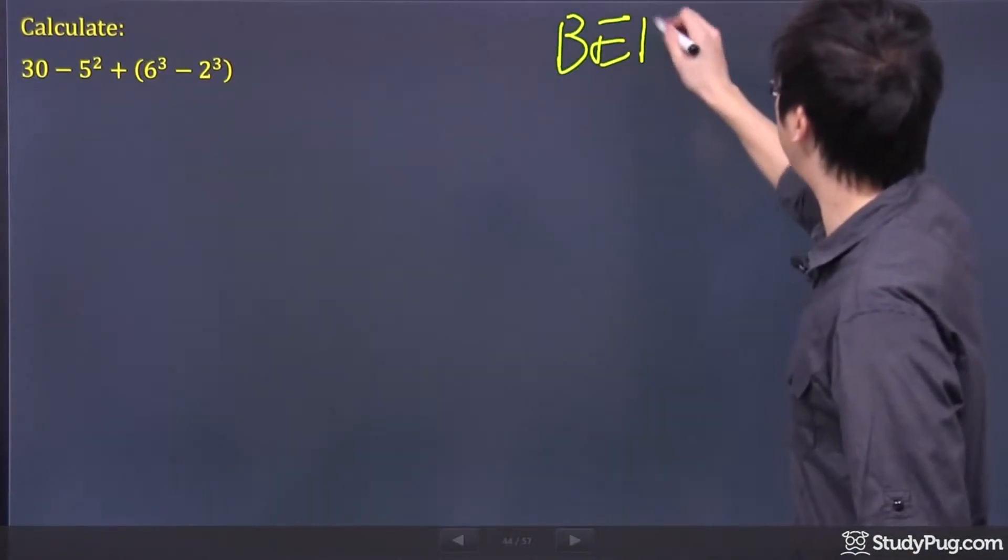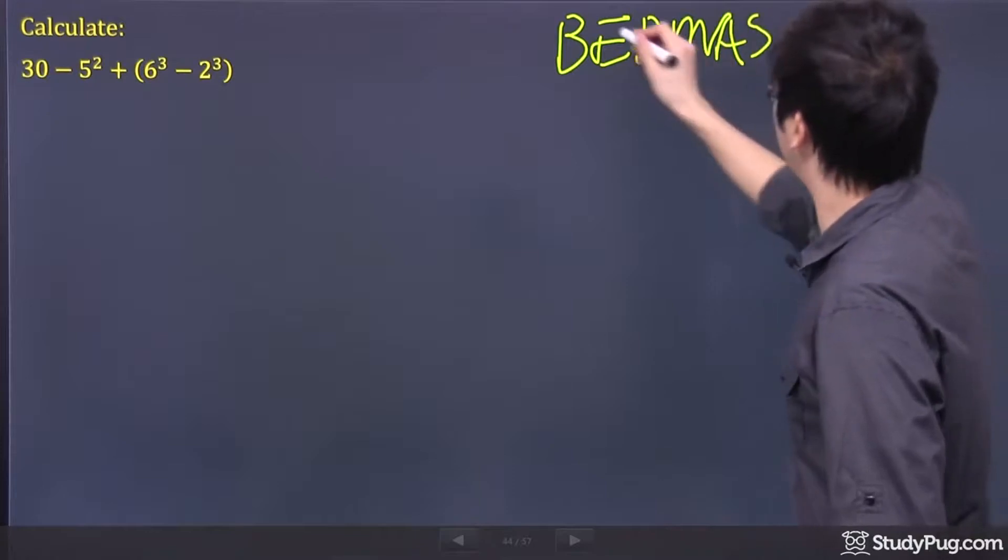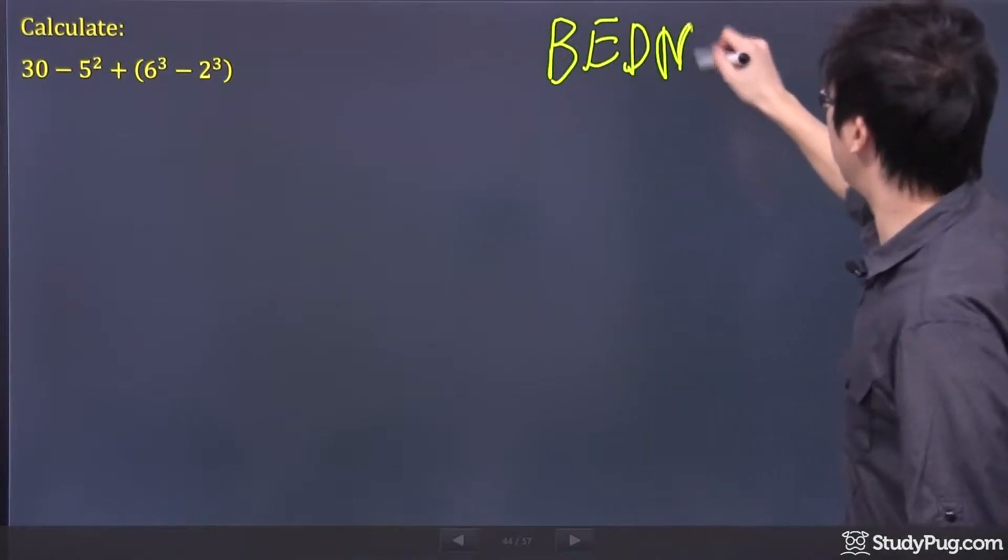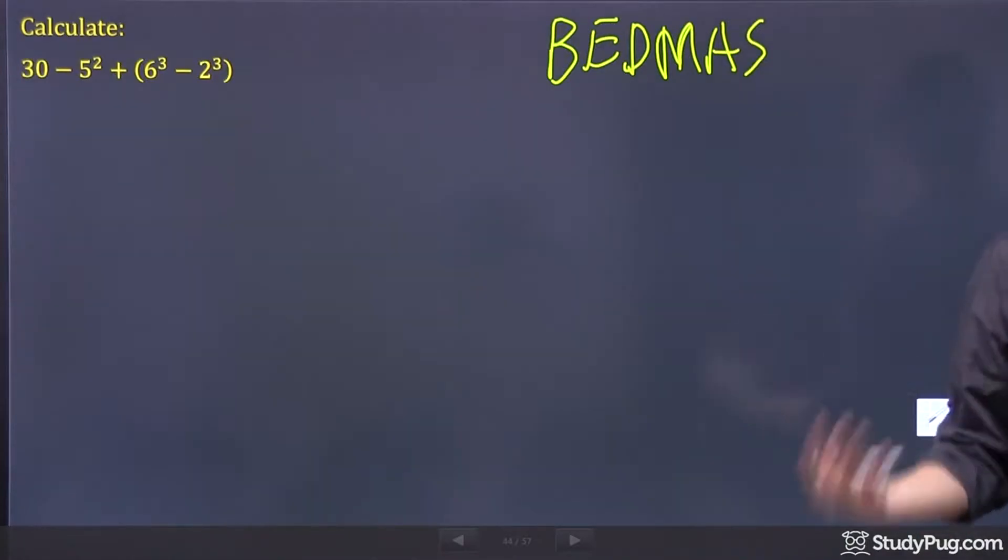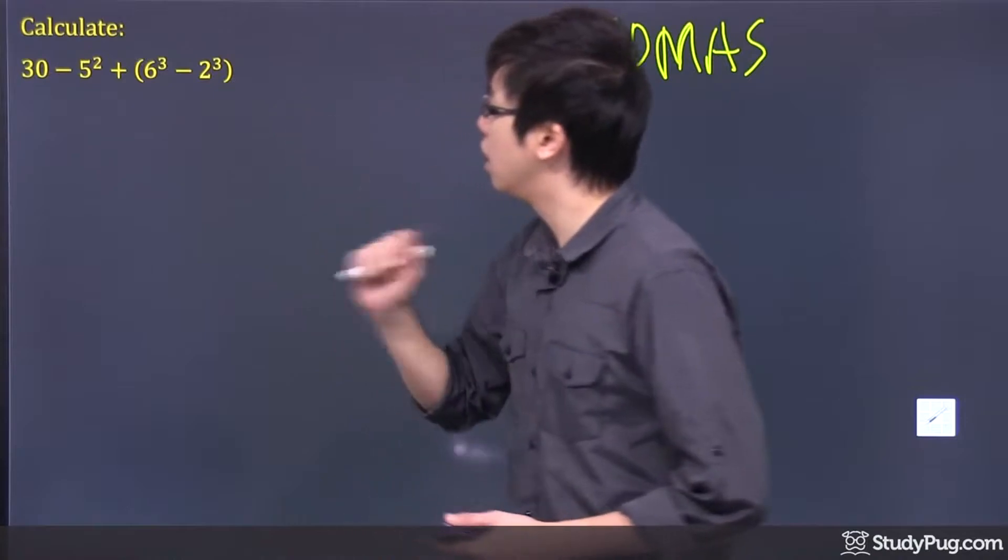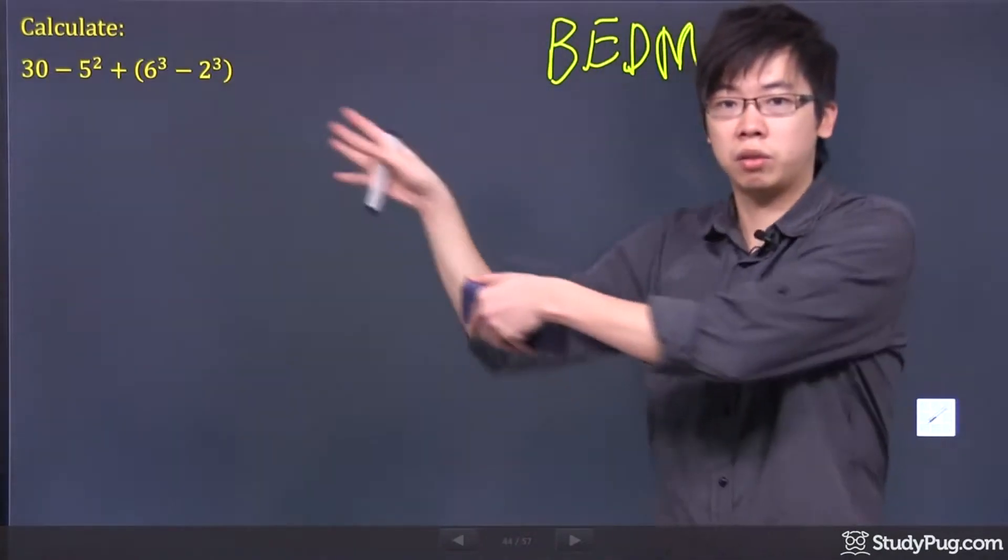So remember the order of operations says BEDMAS. So as you go through the question, make sure you check, do you have the bracket, do you have the exponent, do you have division, stuff like that. So as I look across, I see there's a bracket. So let's tackle the bracket first.